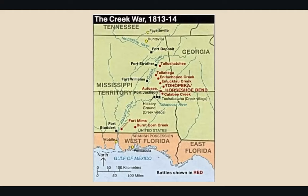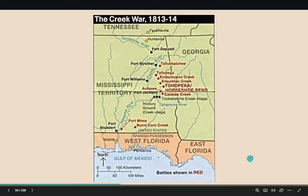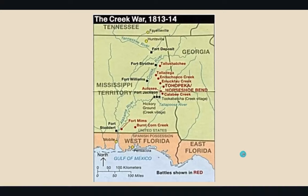Jackson regretted letting them go. He sent word ahead to General Coffey, saying 'if you see these men going, immediately fire on them and continue to fire until they are subdued.' So many of Jackson's men began to desert. That's just when the East Tennesseans showed up in December of that year, coming into this situation. Jackson said, 'Oh, you are the best troops I've ever seen.' Then he found out their enlistments were running out too, and his tune changed very quickly.